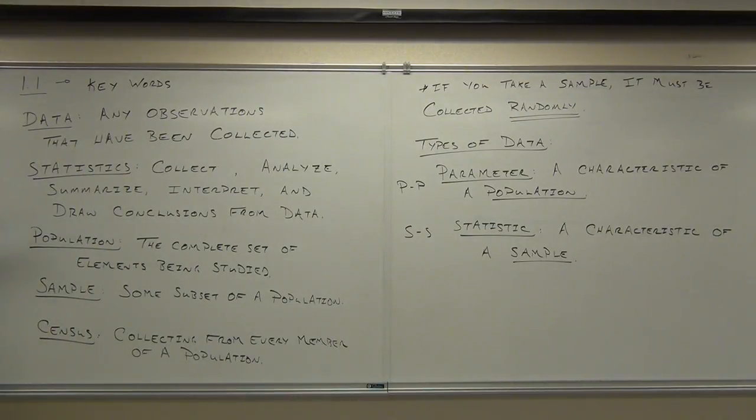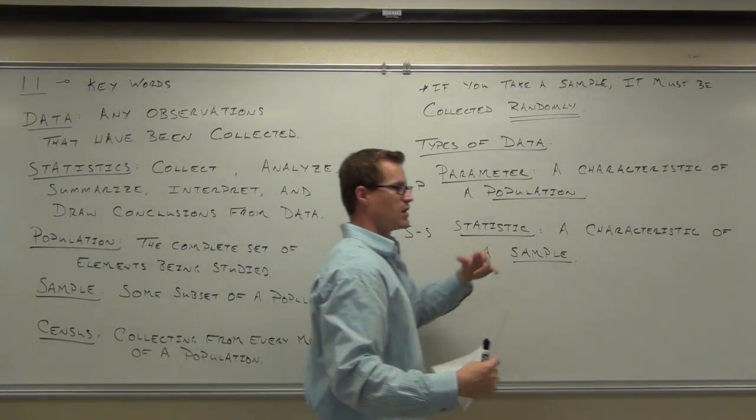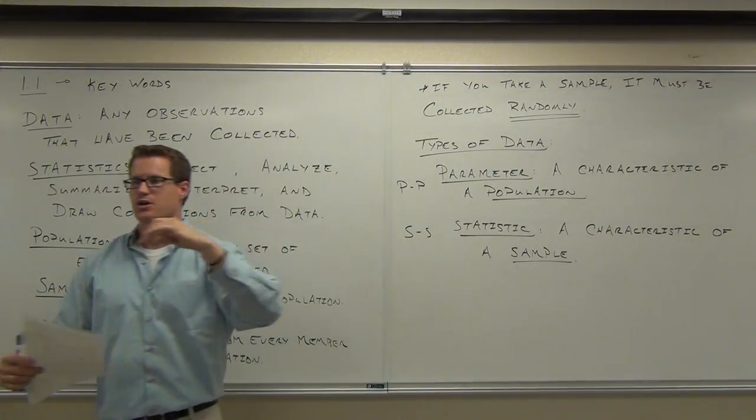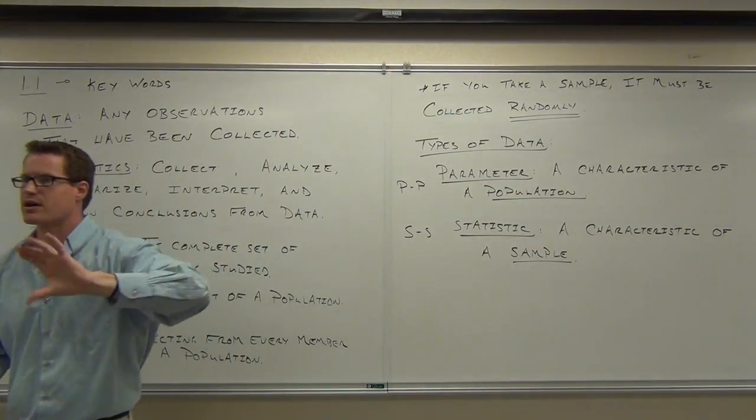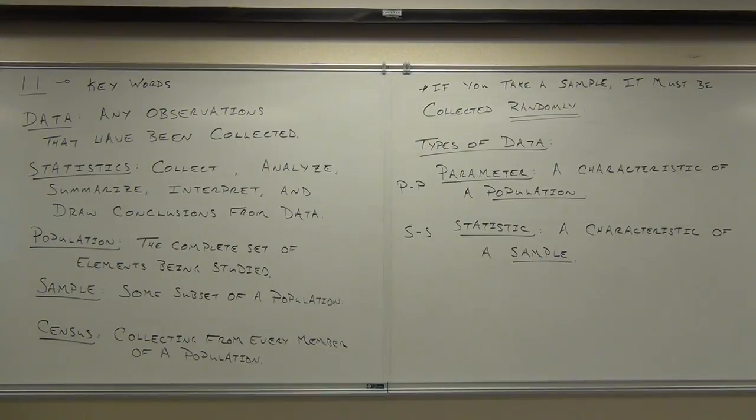Okay, so we've got data, statistics, populations, a whole group, samples, a small group. If we're talking about characteristics of populations, we're in parameters. If we're talking about characteristics of samples, we're talking about statistics. They're both characteristics. It's just what group you are referring to. Now we can move on to the types of data.